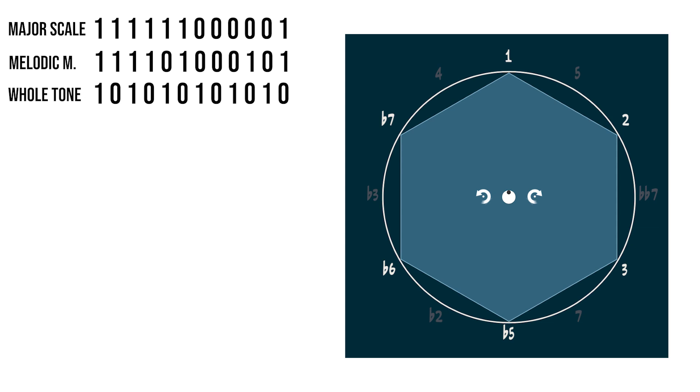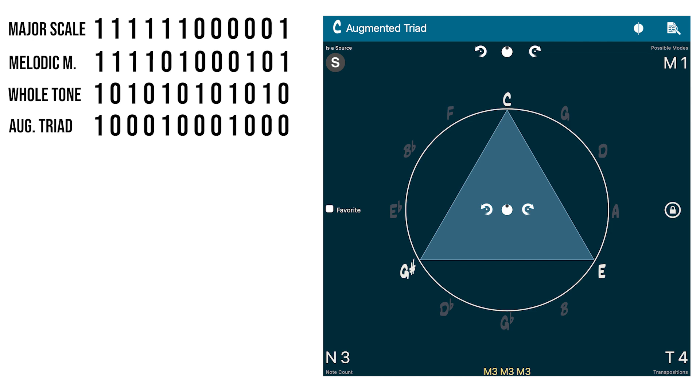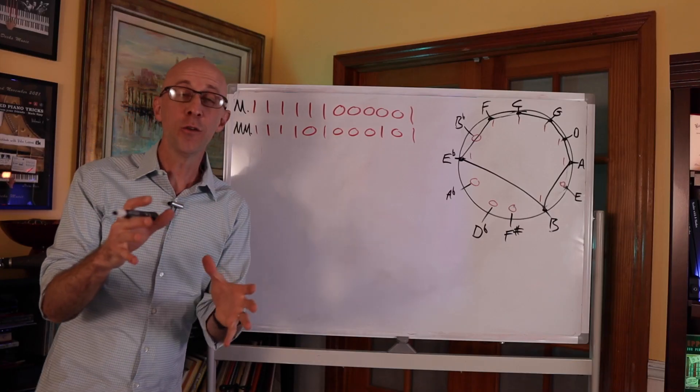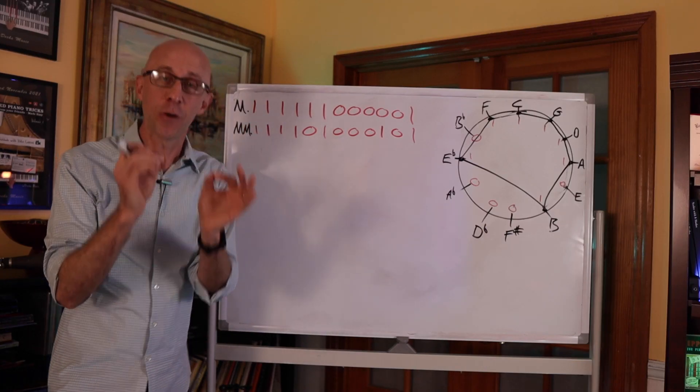Here we have the whole tone's binary number and the augmented triad's binary number. So if you've stuck with us so far, congratulations. It's about to start making sense.